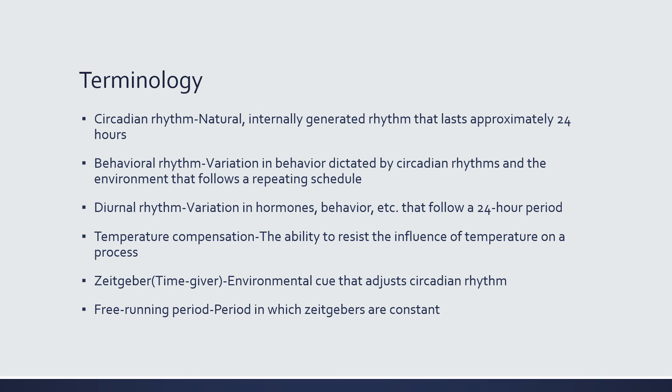A zeitgeber, or 'time giver,' is an environmental cue that adjusts circadian rhythms. Light is a zeitgeber; feeding is a zeitgeber; physical activity is a zeitgeber — there are a whole bunch of zeitgebers. The free running period is a period in which zeitgebers are either held constant or absent. We use this to determine if something truly follows a circadian rhythm or whether it's dictated more by behavioral rhythms.